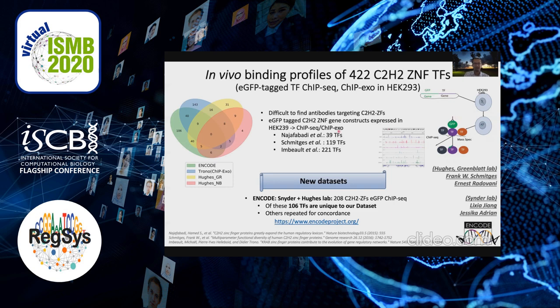They've done this for many hundreds of zinc finger TFs. We created an expanded set of C2H2 zinc finger transcription factors by also doing ChIP-seq on 208 C2H2 zinc fingers as part of ENCODE.